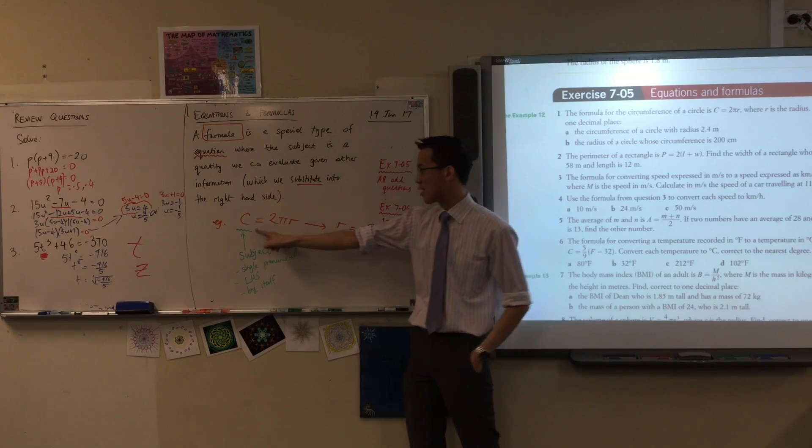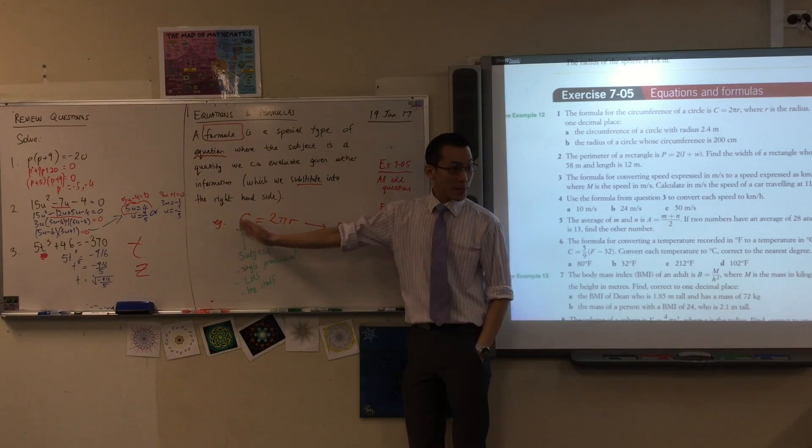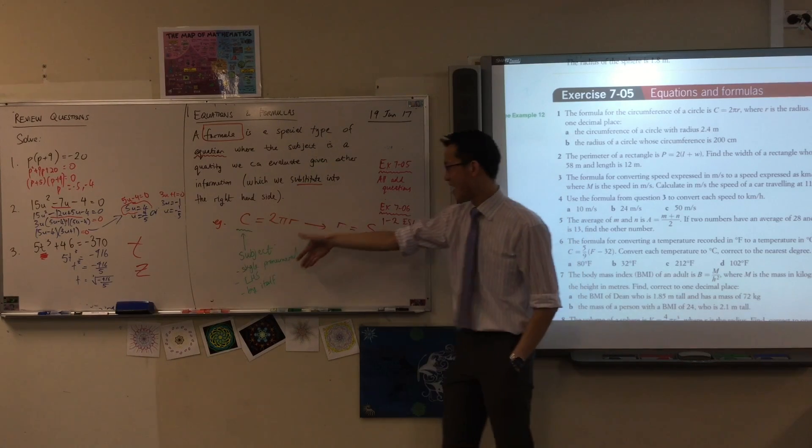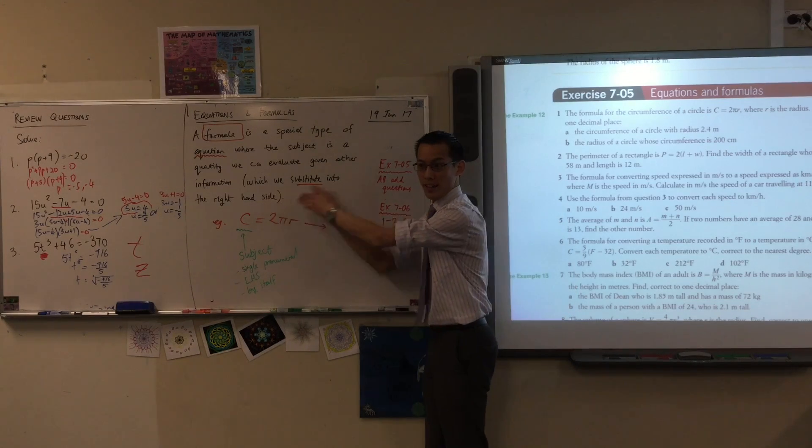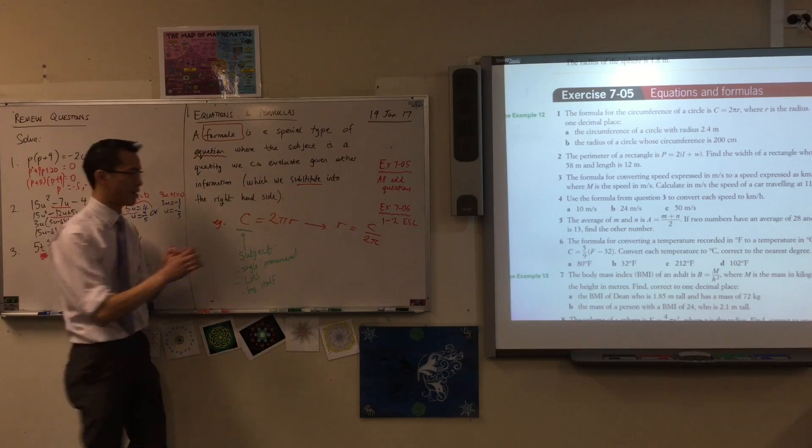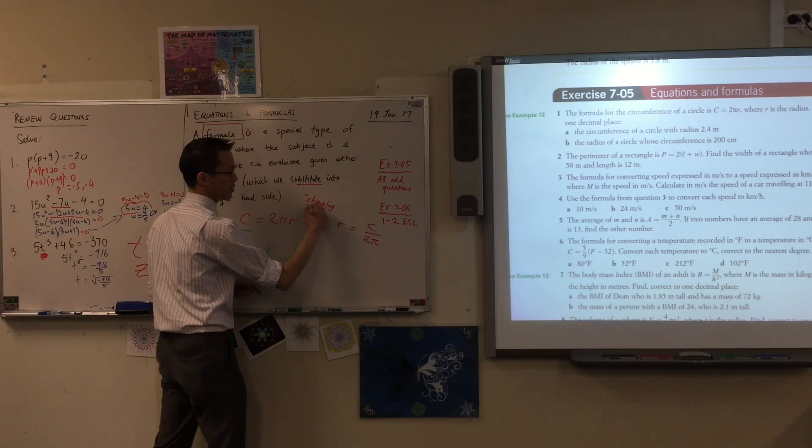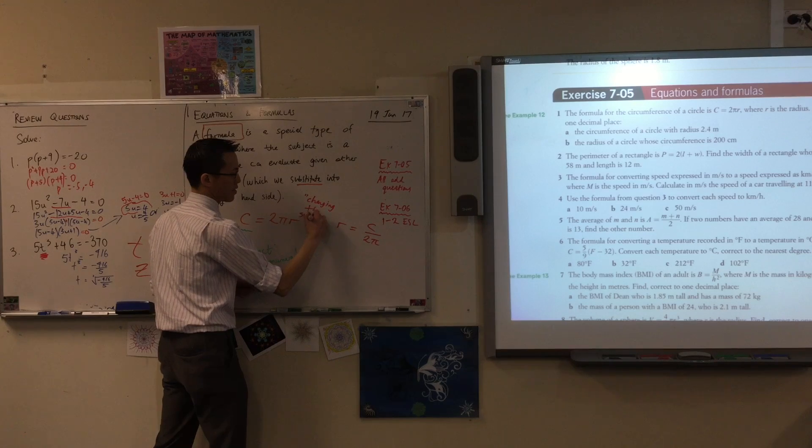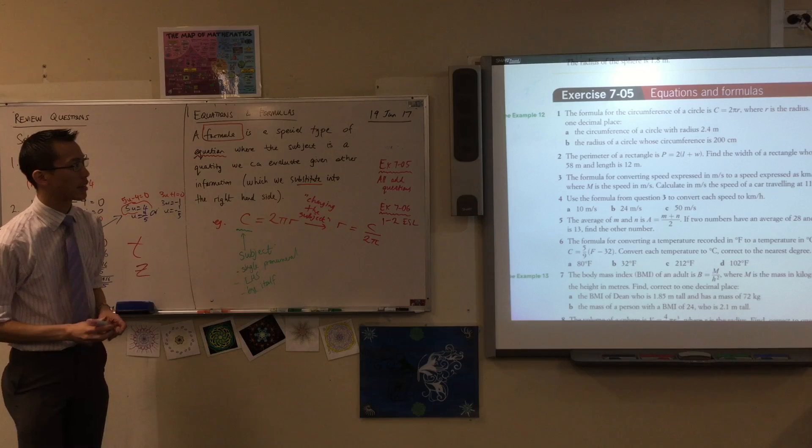Now therefore, since you can see what I've done from here to here is the subject used to be C, it used to be the circumference, and now the subject is r. This process from here to here is called a really important process—that is what 7.06 is about. It's called changing the subject.